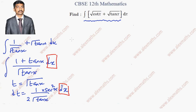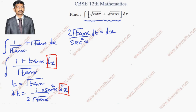We need to substitute the value of dx. Taking dx from this expression by carrying the remaining terms to the other side, dx = (2√(tan x) / sec²x) dt. Now let's substitute everything into the integration: 1 + tan x...